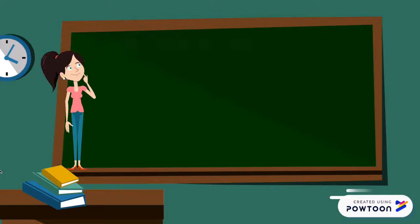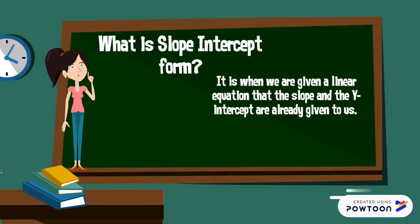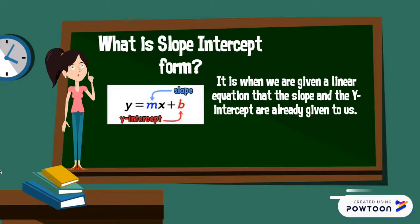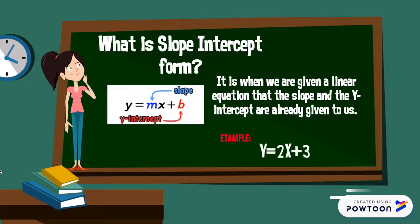What is slope-intercept form? It is when we are given a linear equation where the slope and the y-intercept are already given to us. So we have to remember our formula, which is y equals mx plus b, where m is the slope and b is the y-intercept.